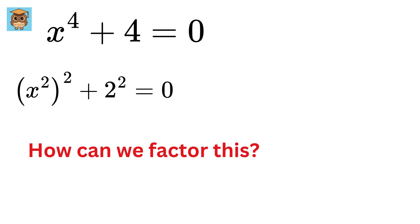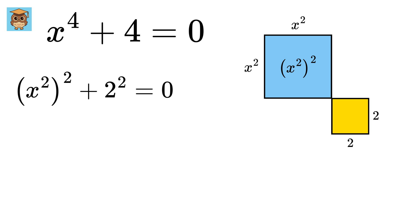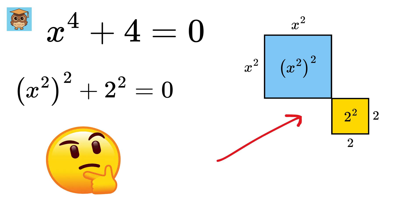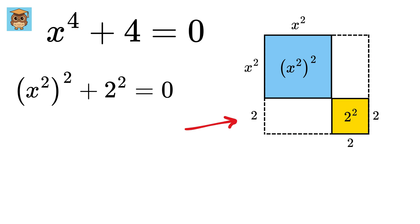I will make you visualize it using geometry. Make a square of length x², so its area will be the same as x² whole squared. Now make another square of length 2, such that its area will be 2². Now, if you look at this, can we make it into a big square? Yes, we can, by making this part and then this part. This side will be 2, and this side is x², so this area is 2x².